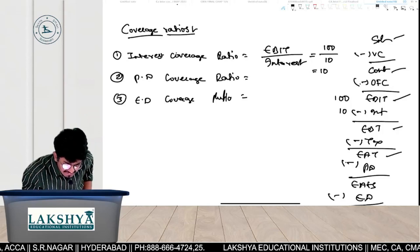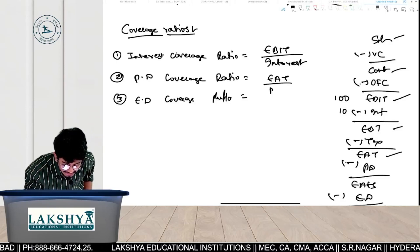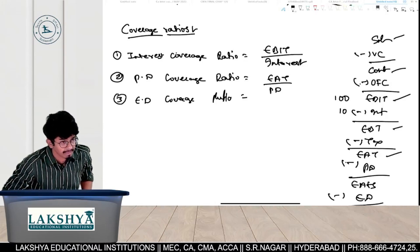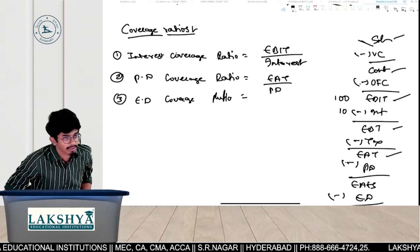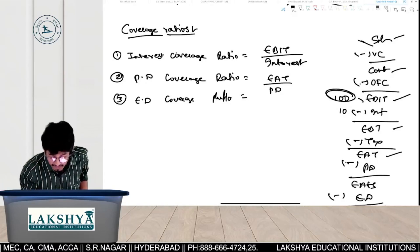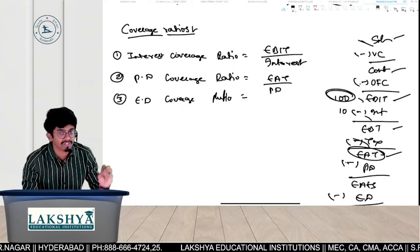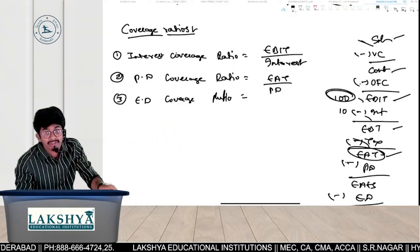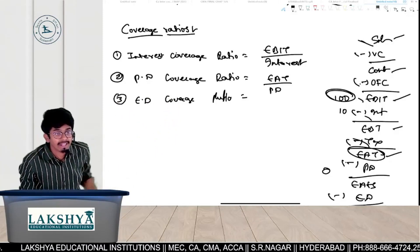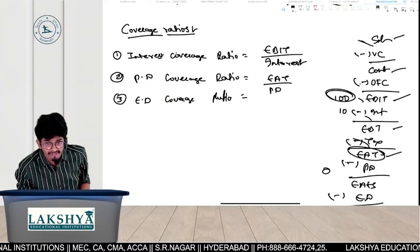Tell me the formula for Preference Dividend Coverage Ratio. EAT divided by Preference Dividend. Because from the point of view of preference shareholders, EBIT alone is not sufficient — we first have to pay interest and tax. After paying interest and tax, we get Earnings After Tax. From that, we pay the preference dividend. So the focus of preference shareholders is always on Earnings After Tax. That's why the formula is Earnings After Tax divided by Preference Dividend.